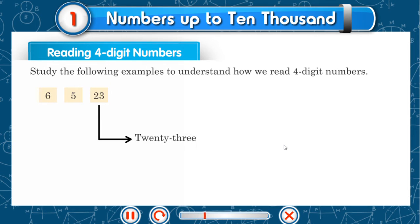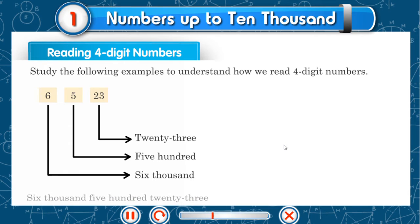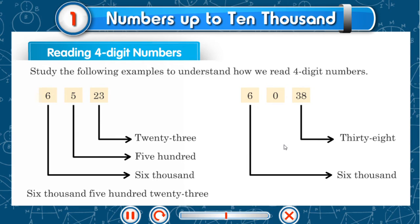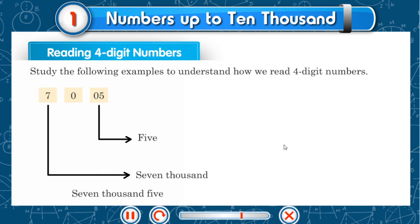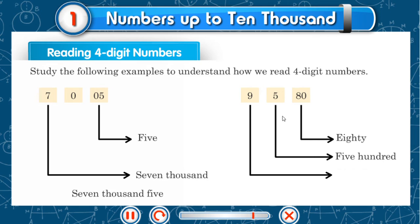23, 500, 6000: 6,523. 38, 6000: 6,038. 5, 7000: 7,005. 80, 500, 9,000: 9,580.